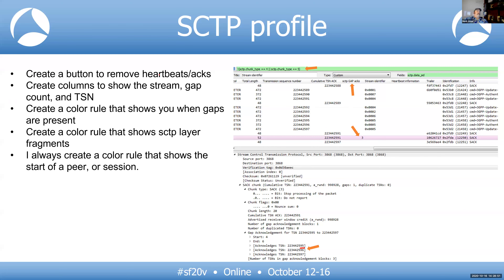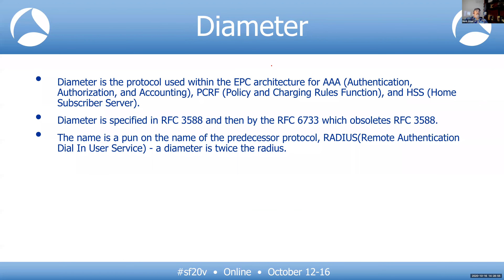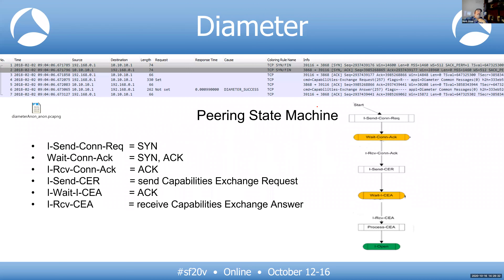The next protocol is Diameter, which is the evolution of RADIUS. The name simply means "twice as good as RADIUS." The RFC is outlined here, and the equipment we communicate over Diameter includes the PCRF and HSS. When Diameter is first stood up, it uses a peering state machine — similar to BGP. If you catch it during turn-up, you'll see states like send, send, send, mapping to send connection request, wait connection, and receive connection.